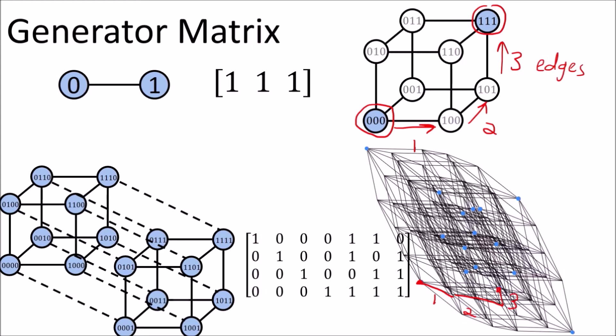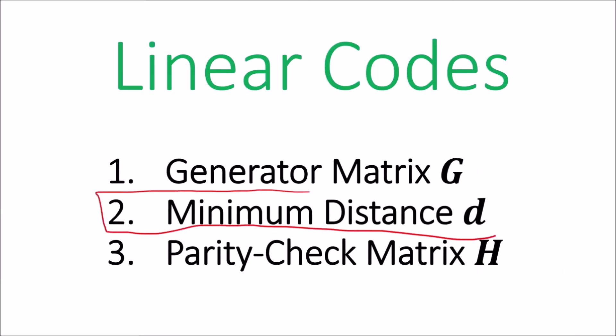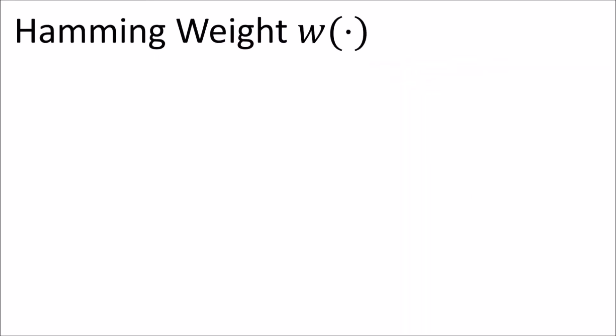The fact that the code words are all separated by three edges is related to the next topic, which is a code's minimum distance. A code's minimum distance d is what determines its error-correcting capabilities. Before we give a definition for that, I'm going to introduce the Hamming weight of a code word.